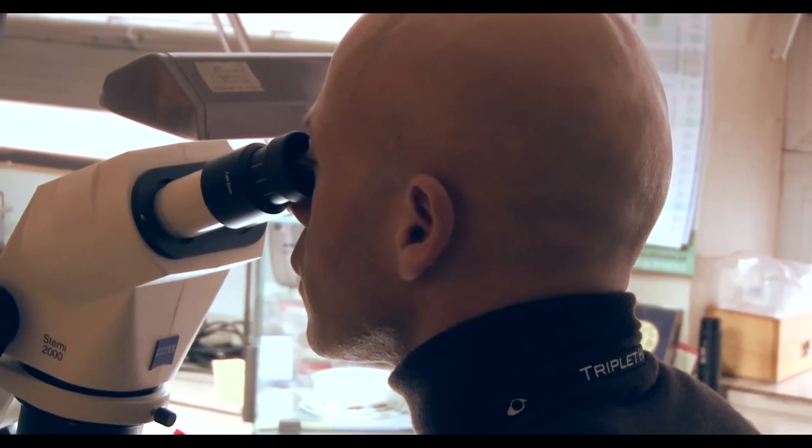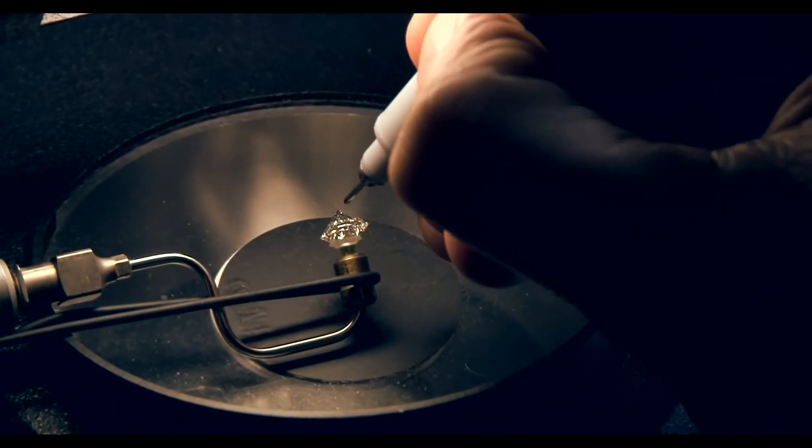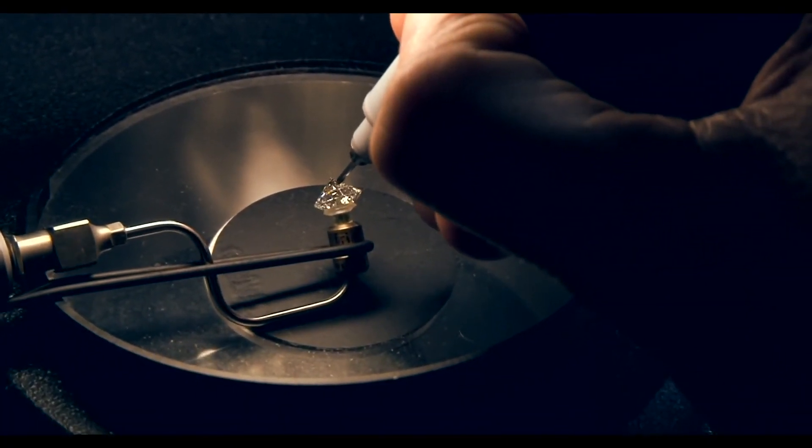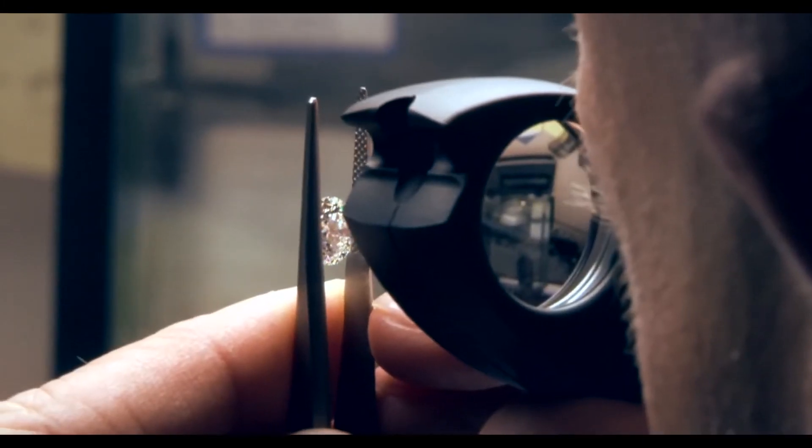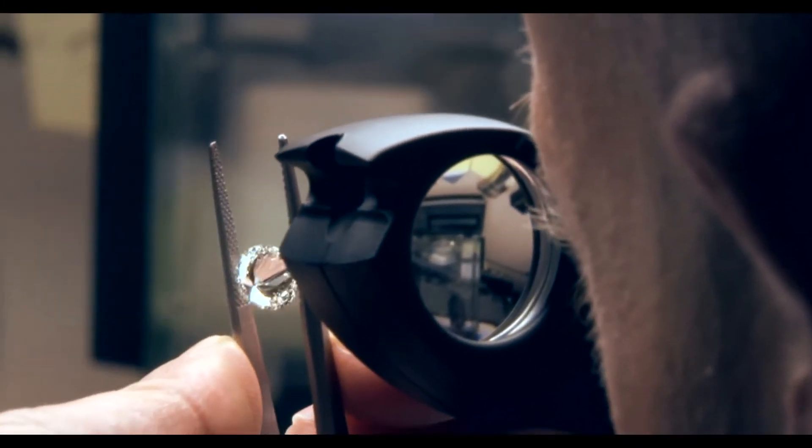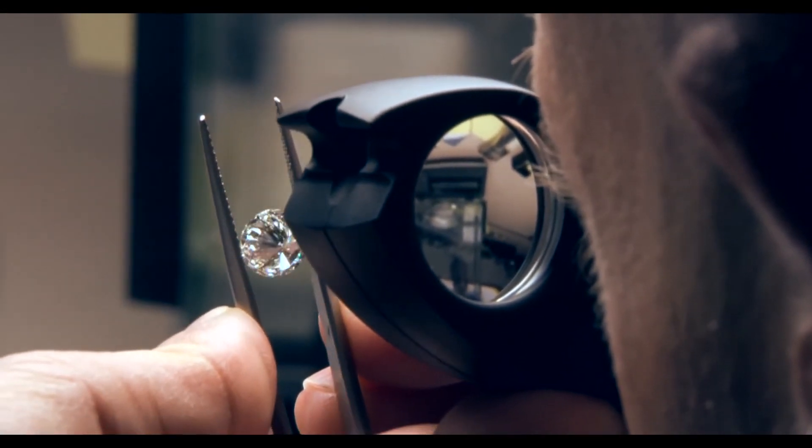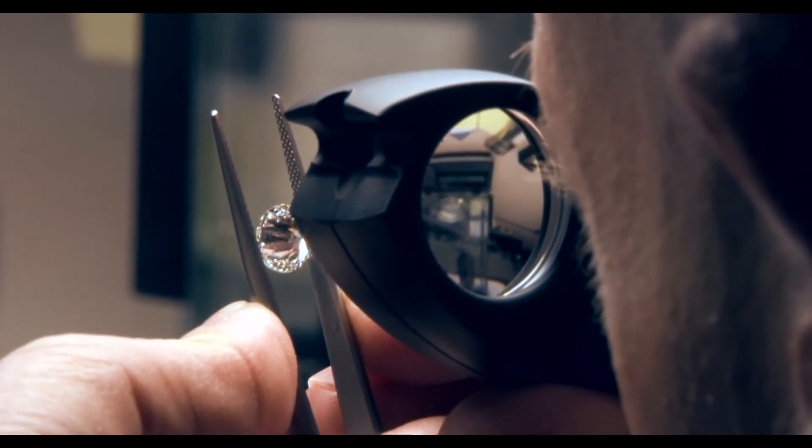Every stone has 57 facets of the brilliant cut, and I check them—for every facet three or four times. It means every stone takes a lot of time. At this stage, the polishing company will be able to predict with a high degree of accuracy the grade that the diamond will ultimately achieve. It's now ready to be sent to the grading lab to be assessed.